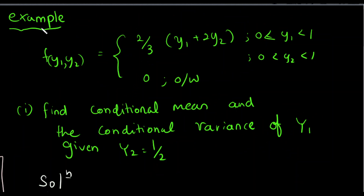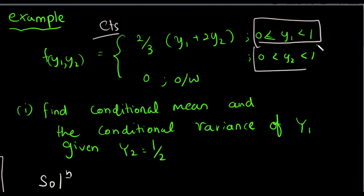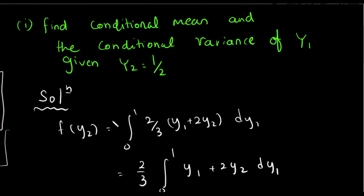Now we will show an example with a continuous random variable. We will show the joint density function of y1 and y2 and the range of y1 and y2. We will find the conditional mean and the conditional variance of y1 given y2 equals one half. We will show the conditional expectation of y1 given y2, using the conditional probability density function.